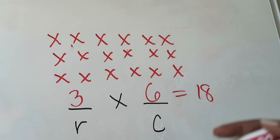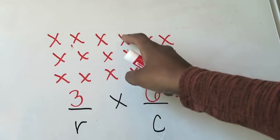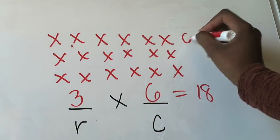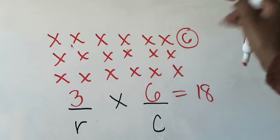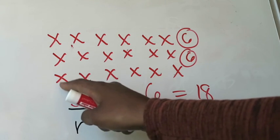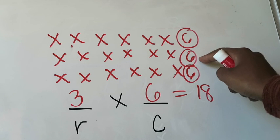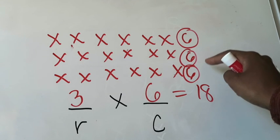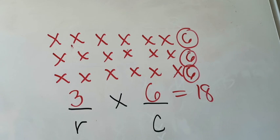And just to reiterate the idea that multiplication is repeated addition of the same number, let's look at this array in a different way. The first row has six, the second row also has six, and the third row also has six. So I'm adding six plus six, which is 12, and then 12 plus another six, which is 18. That shows and proves to us that this multiplication problem based on this array represents repeated addition of the number six.